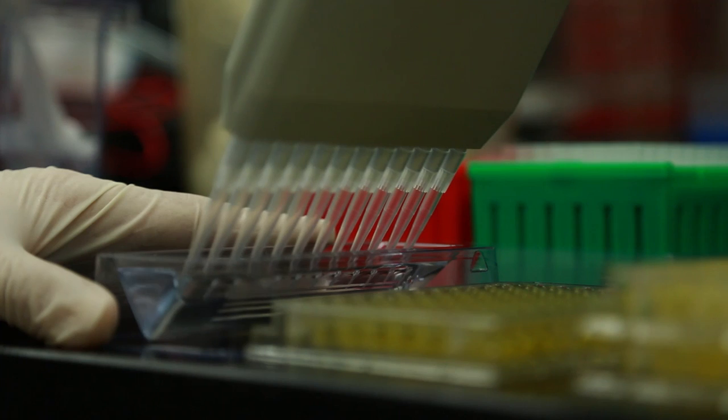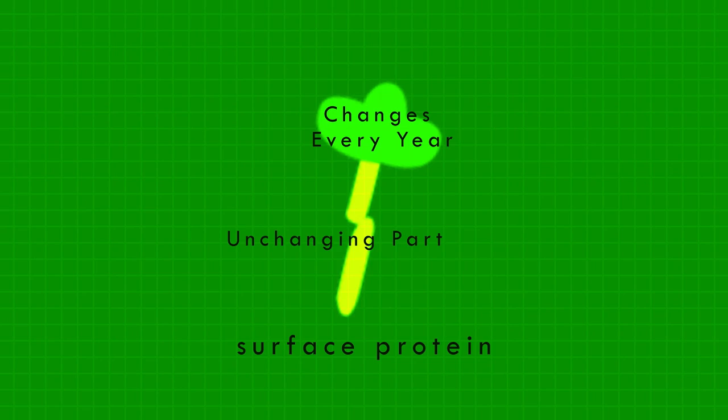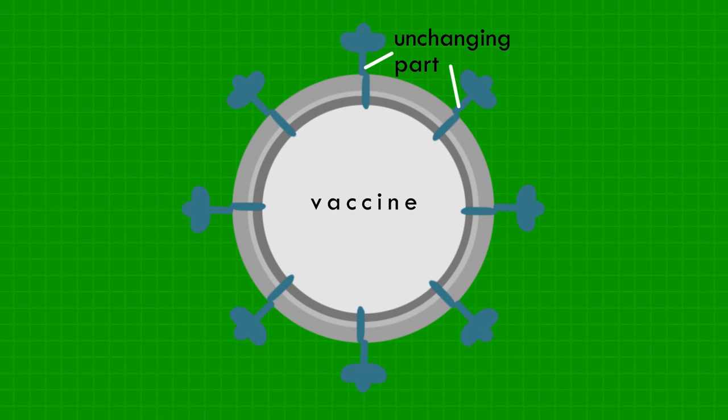Now, researchers have found a part of the flu virus that stays the same year after year. Surprisingly, this part goes undetected by our immune system. To teach the immune system to see this part of the flu virus, researchers created a vaccine that looks like a spiky ball.